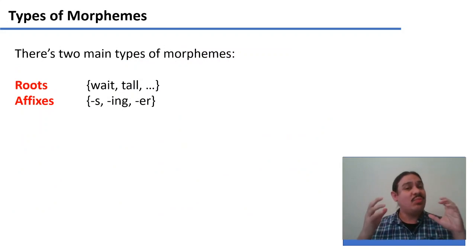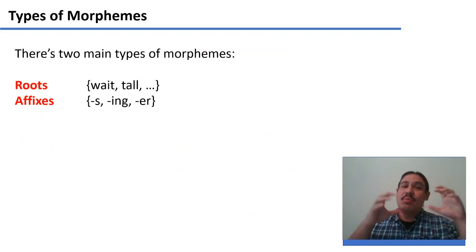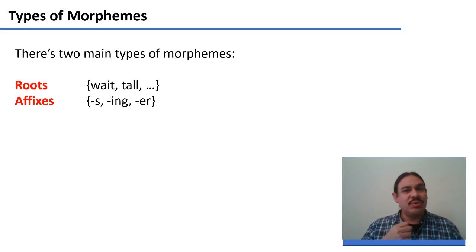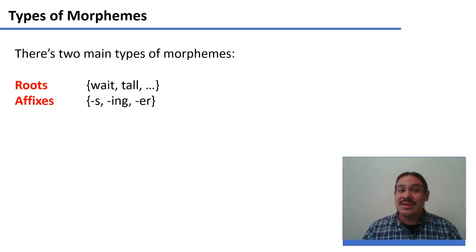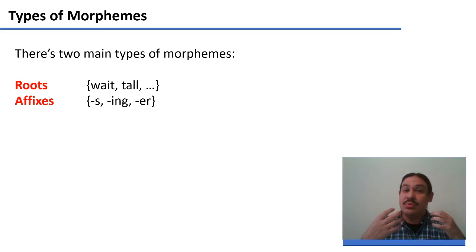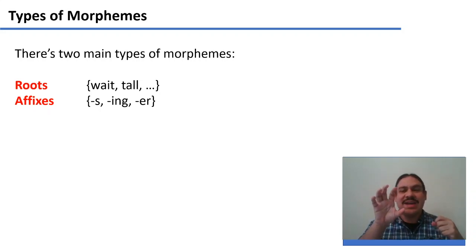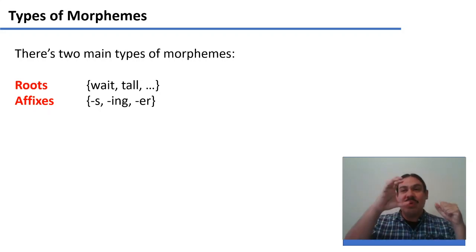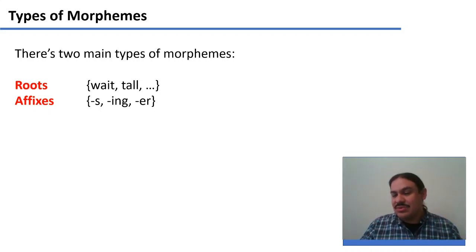So you can have one word with one or more morphemes: 'tree' is a word with one morpheme, and 'trees' is a word with two morphemes. We have two main types of morphemes: roots, which carry the core meaning like 'tree,' and affixes, which add grammatical meanings — such as the 's' in 'trees' and 'waits,' or the 'ing' in 'waiting.'